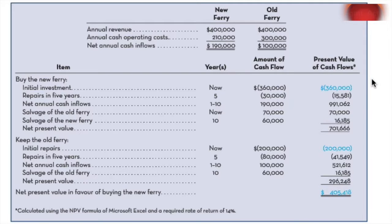Let's do another example. Rather than looking at a single project and deciding whether to go ahead with it, we're going to look at a choice between two options. We have a business that runs a ferry — it can keep its current ferry, upgrade it, and operate it for 10 years, or it could sell it and buy a new one and operate that for 10 years. The book lays out the example showing calculations for both options.